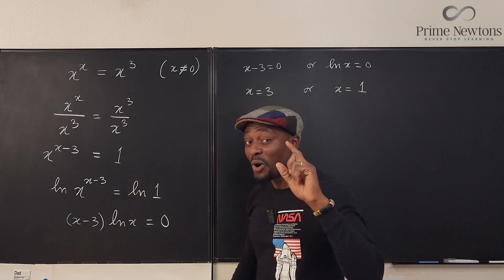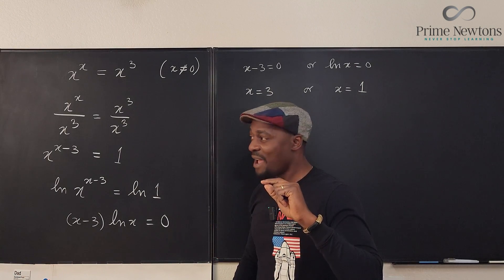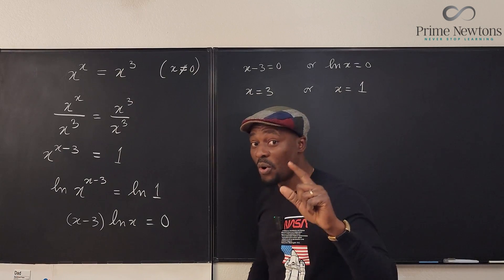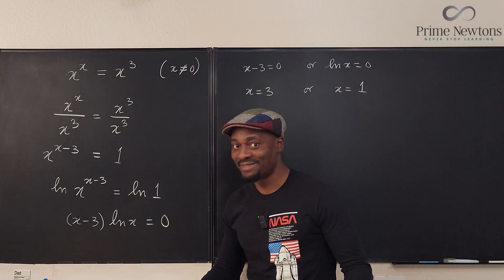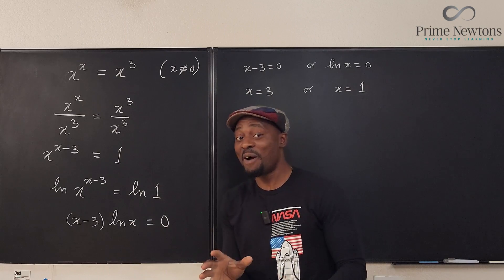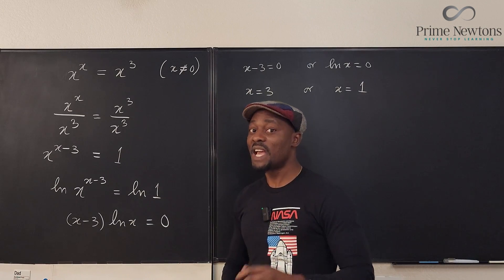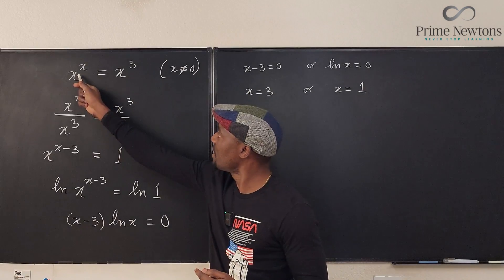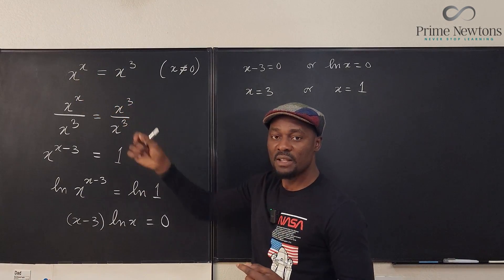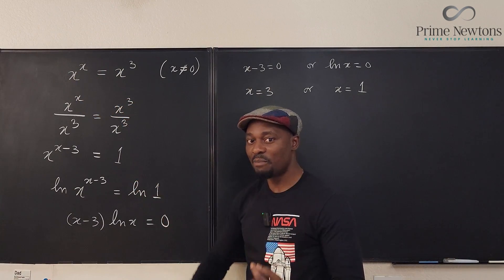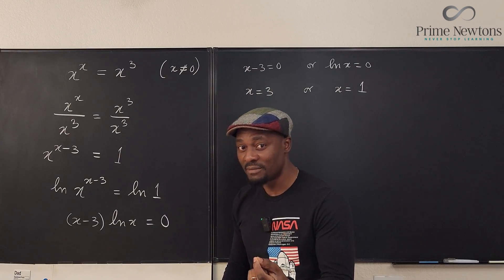But we need one more answer. You have to get that by observation or by plotting the graph. So that's how I found out how to figure out what the third one is. If you sketch the graph of this function and you sketch the graph of this function, there is an intersection at the point x equals minus 1 which is the third answer.